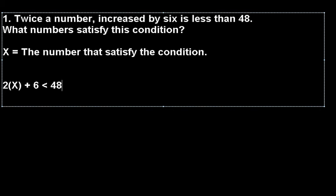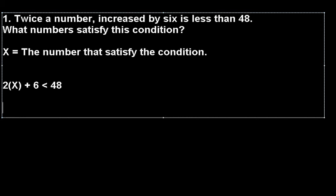Now it's simple from here on. It's simple solving equations which you guys should be able to know. We're going to multiply 2 times x and you would have 2x + 6 < 48.